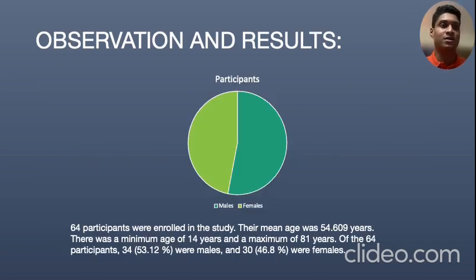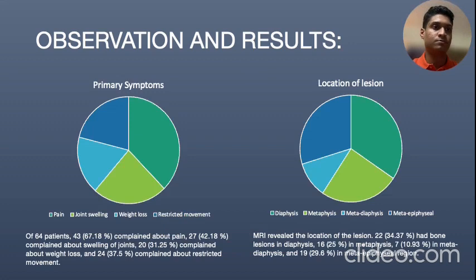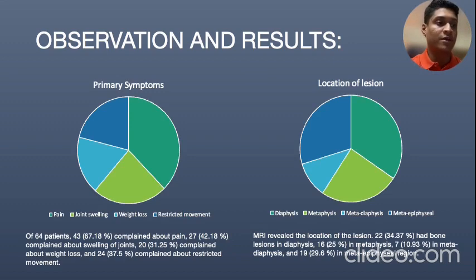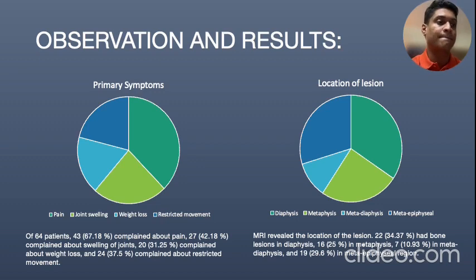Coming to the observations and results: 64 participants were enrolled in the study. Their mean age was 54 years, with a minimum age of 14 years and a maximum age of 81 years. Of the 64 participants, 34 were males (53.12%) and 30 were females (46.8%). Regarding primary symptoms, 43 complained of pain (67%), 27 complained of swelling of joints (42%), 20 complained of weight loss (31.2%), and 24 complained of restricted movement (37%).